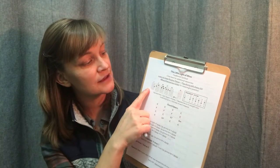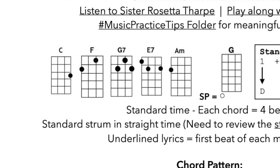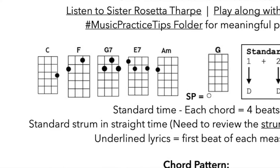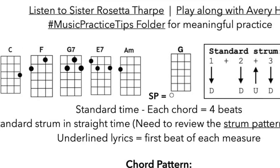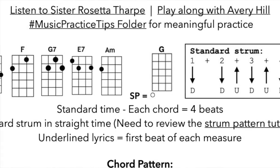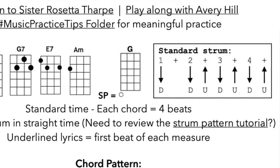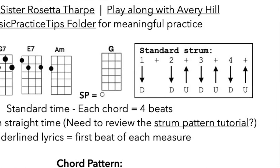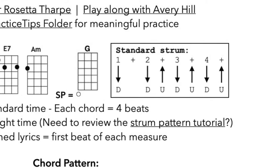Down below, you've got pictures for all of the chords, and then you also have 'SP,' which stands for starting pitch. When you're starting to sing a song, you want to know what note you're singing — in this case it's a G, which you can play on the open G string. If it's a low G, that'll give you the right octave as well. Next to that is a graphic of the strum pattern. Underneath, there's a bit more information: standard time, each chord equals four beats, standard strum and straight time. Sometimes if it's a tougher one, I'll include a link to the tutorial if you need to review the strum pattern.